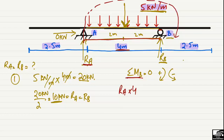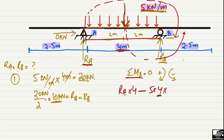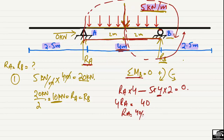The distributed load of 5 kN/m creates an anti-clockwise moment about point B, so it is negative. That is: minus 5 kN/m multiplied by 4 m (the distributed length), multiplied by 2 m (the moment arm from mid-span to point B). Setting the equation to zero: Ra × 4 = 5 × 4 × 2 = 40, so Ra = 40 ÷ 4 = 10 kN.